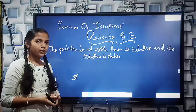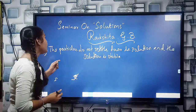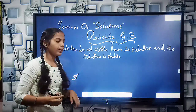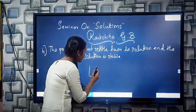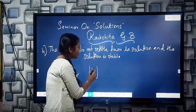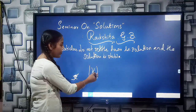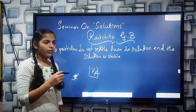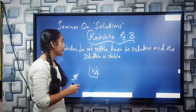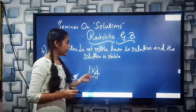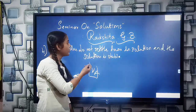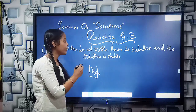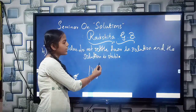The fourth property of the solution says that the particles do not settle down in the solution and the solution is stable. We already took the example of the sugar solution. If we add some water and sugar and dissolve it, we cannot see the particles settling down. So this shows that the particles do not settle down and the solution is stable.